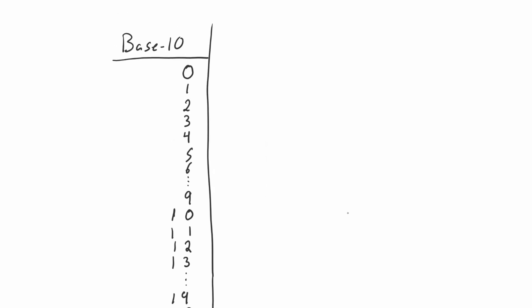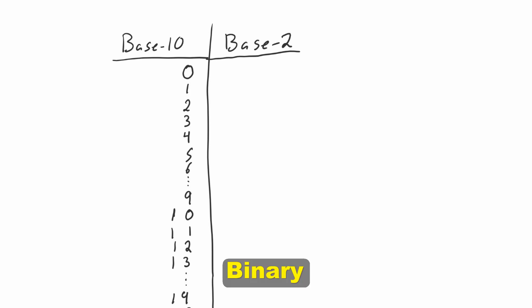What do we do when we have the base two number system? We do the exact same thing. We start with zero, then we increment by one and go to one. When we try to increment by one again we can no longer represent the next number — two — with one digit, so we add another digit starting from one and reset the right digit. Then when we go to three we simply increment the right digit to one and keep the same on the left.